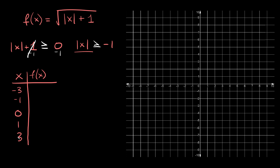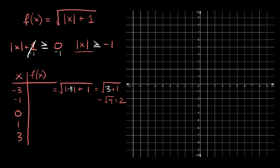Now let's plug in our x values into the original function. For the first one, f(x) equals the square root of the absolute value of x plus 1, and we're plugging in negative 3. The absolute value of negative 3 is positive 3, so this becomes the square root of 3 plus 1, which is the square root of 4, which equals 2. So when we plug in negative 3, f(x) equals positive 2.